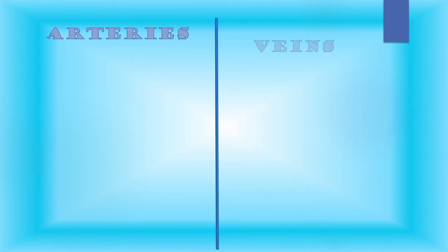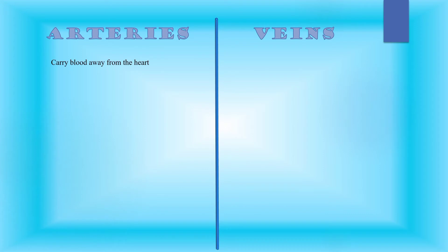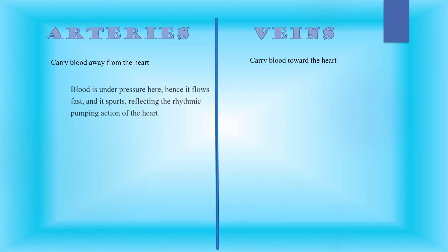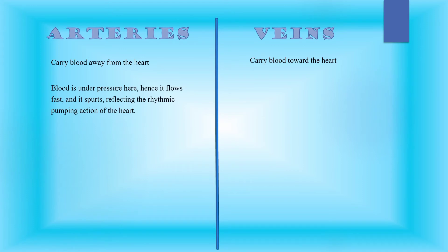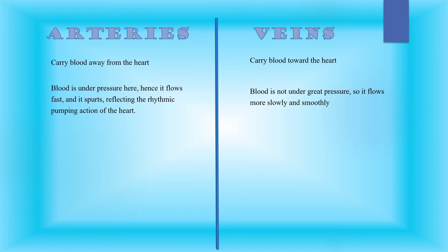Now let us see the difference between arteries and veins. Arteries carry blood away from the heart, while veins carry blood back toward the heart. In arteries, blood is under pressure, so it flows fast and spurts, reflecting the rhythmic pumping action of the heart. While in veins, blood is not under pressure, so it flows more slowly and smoothly.